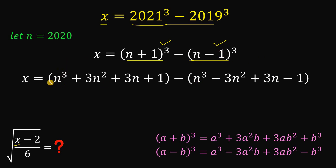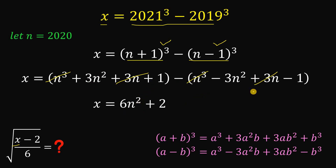Now, as you can see, n³ minus n³ equals 0. Next, 3n minus positive 3n is also 0. Then 3n² minus negative 3n² gives positive 6n². And positive 1 minus negative 1 gives positive 2. So x equals 6n² + 2.